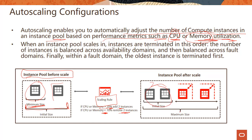So if your initial size is two and CPU goes beyond 70%, you add one instance at a time. If it falls below 70%, you remove two instances — so from four you'd go to two, and with a minimum of one it would go down to one. You define those scaling policies, and depending on the application load you can auto scale out or in.